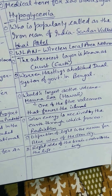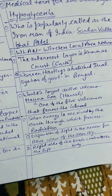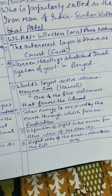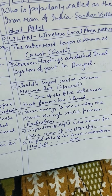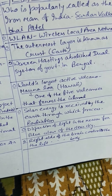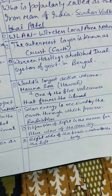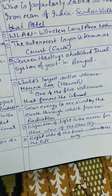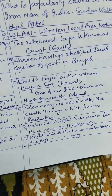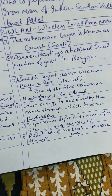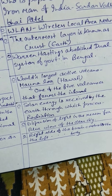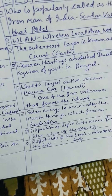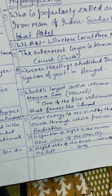Solar energy is received by the earth through the process of radiation. The dispersion of light is the reason for the blue color of the clear sky. The right side of the brain controls the left side of the body. Thank you very much.